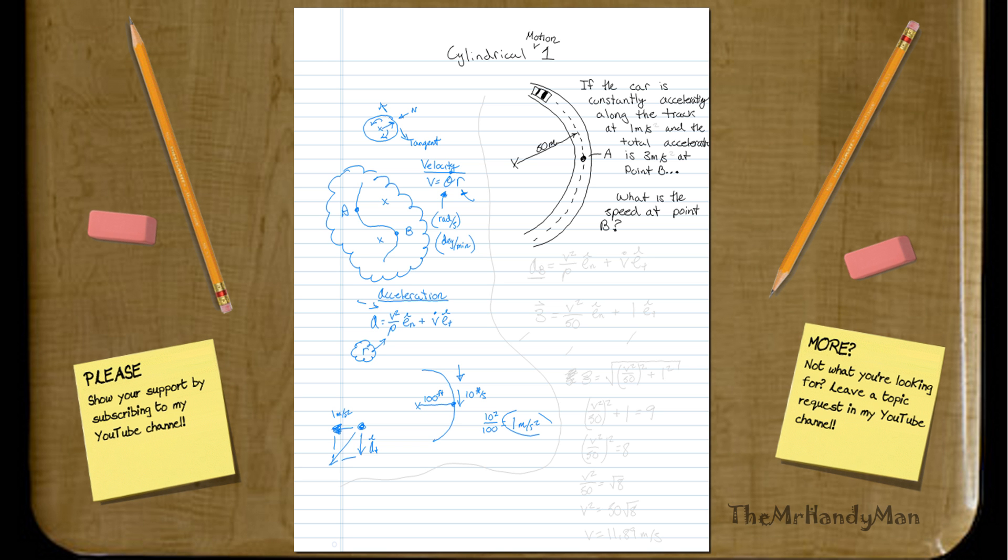Let's just cut this all off here, and let's slip right into the problem. What we have here is if a car is constantly accelerating along this track at 1 meter per second squared, and the total acceleration is 3 meters per second squared at point B, then what is the speed at point B? All you have to do is say, we know the equation for acceleration for cylindrical motion, so let's just put that down first, and then we can pick apart the equation. Acceleration at B is V squared over rho, and this is in the normal direction, plus V dot in the tangential.